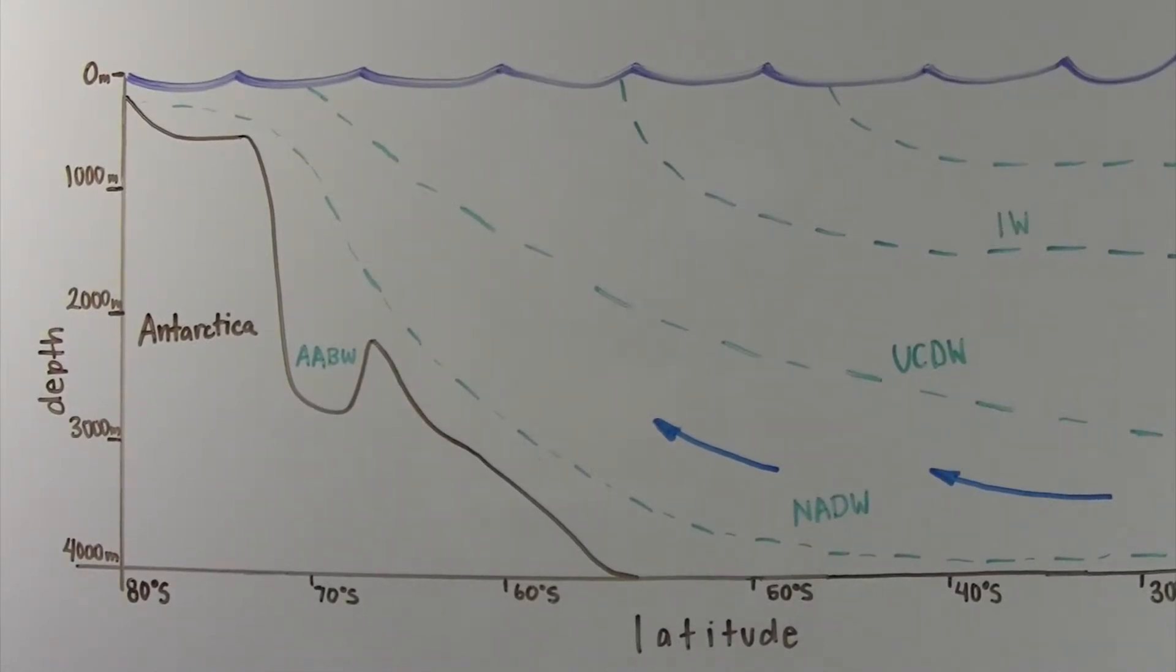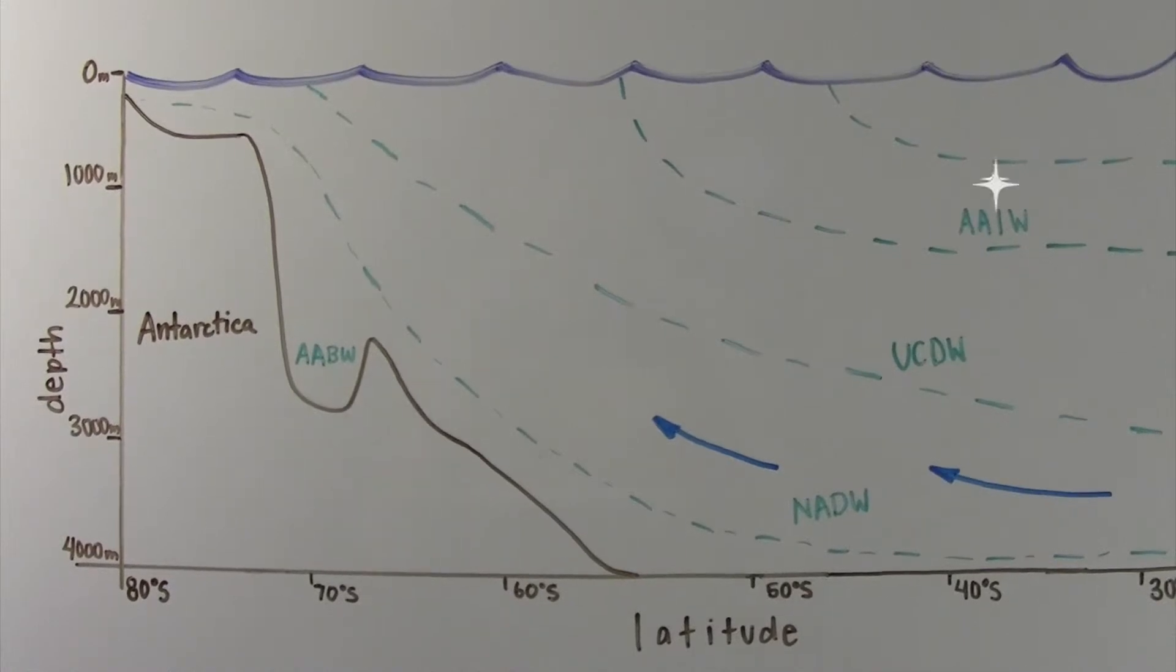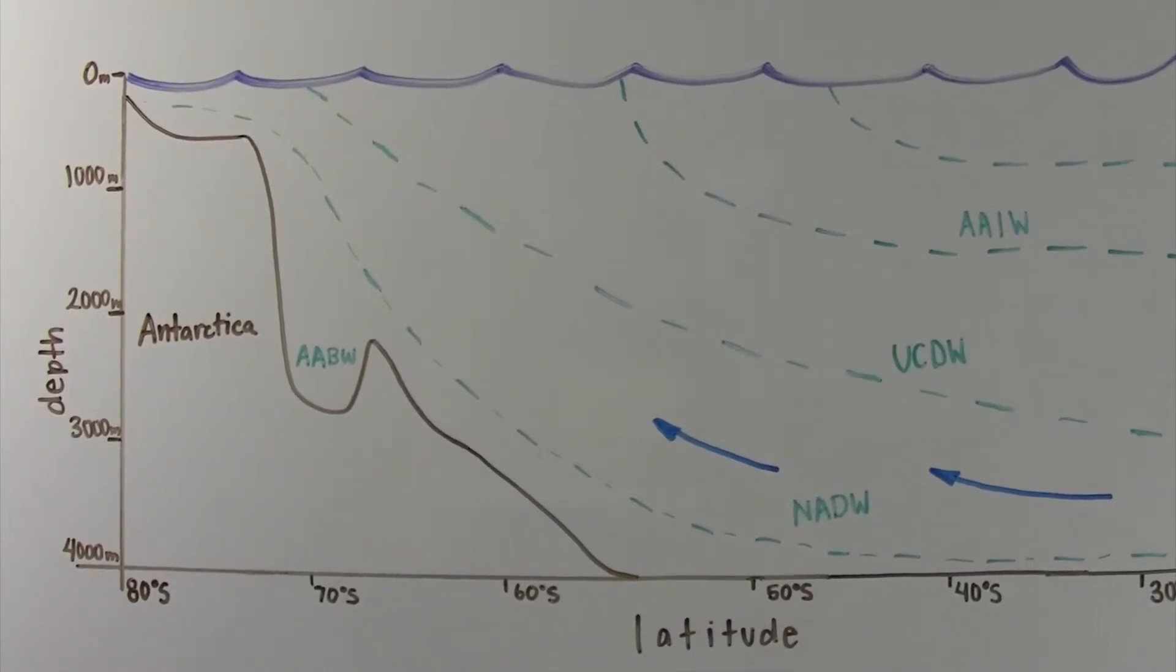In between the surface waters and the depths is the Antarctic intermediate water. Finally, the surface water in the sub-Antarctic is called sub-Antarctic mode water.